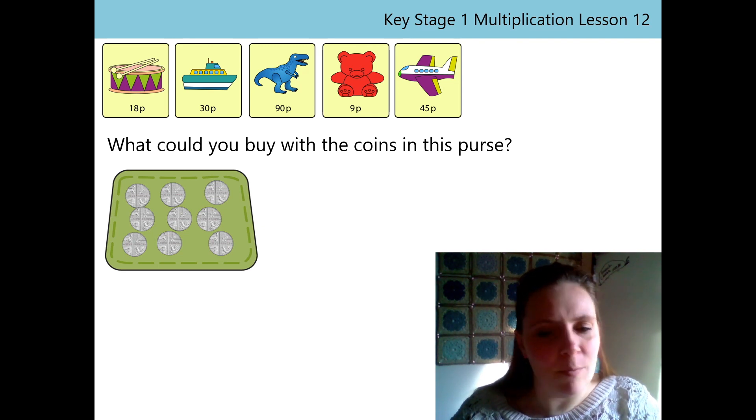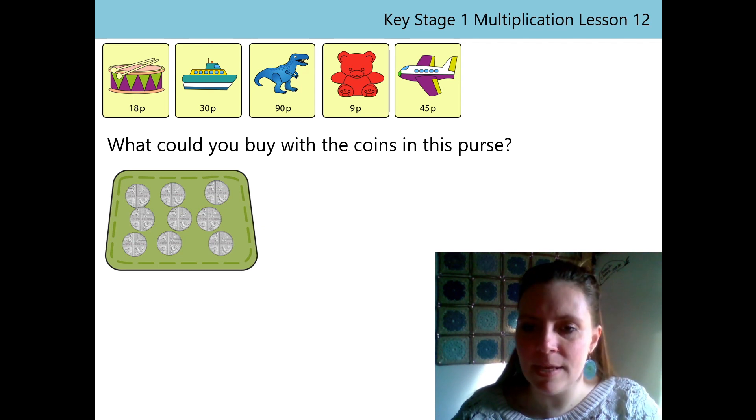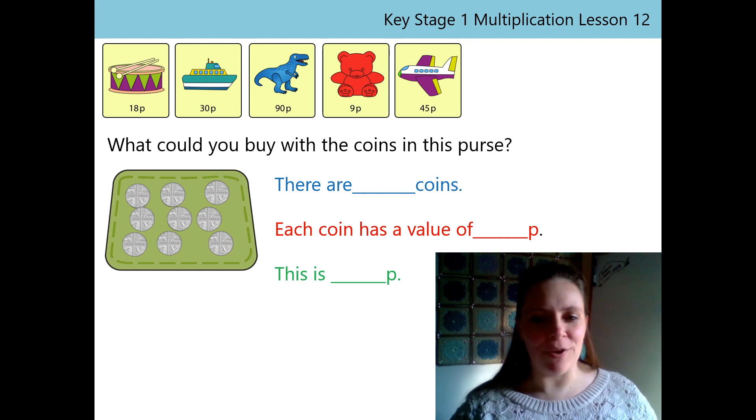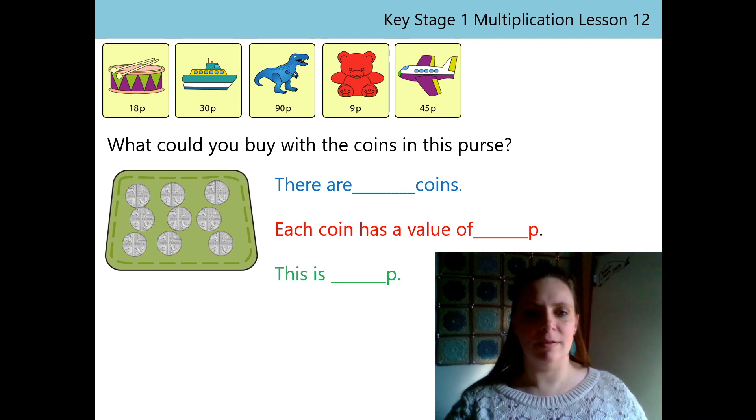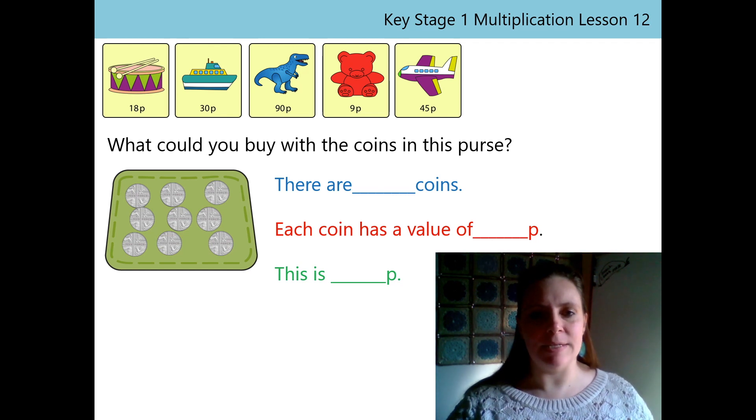Let's just count them again. This time I won't move them either, but we'll count in our 5s. We'll do our skip counting. 5p, 10p, 15p, 20p, 25p, 30p, 35p, 40p, 45p. This is 45p. I can see you're already looking to see what I can buy. But let's just wait till we've popped them in our sentences like last time.